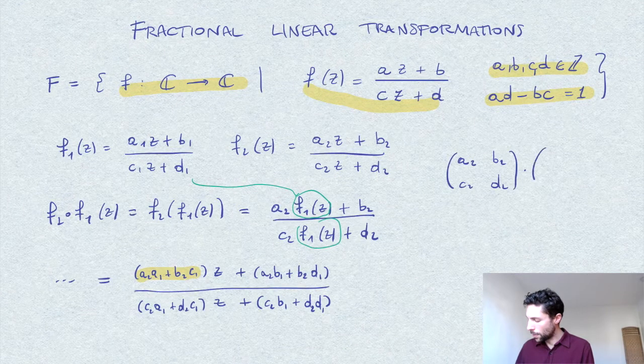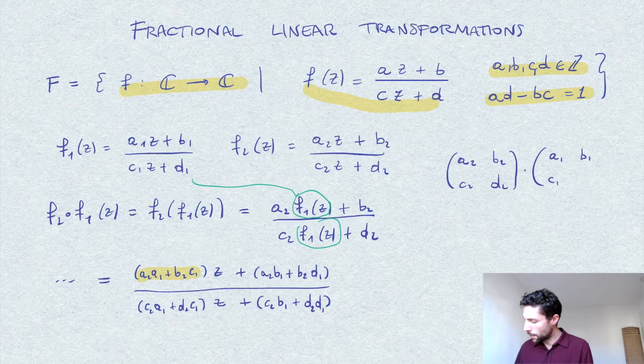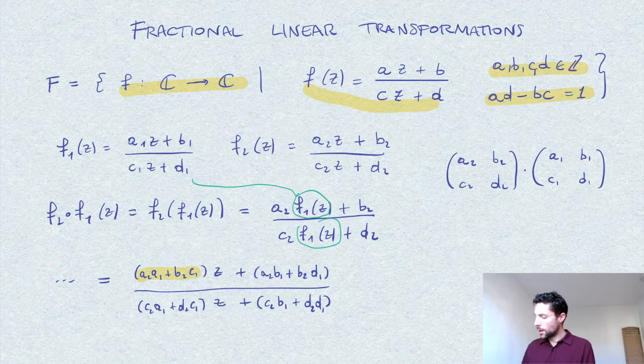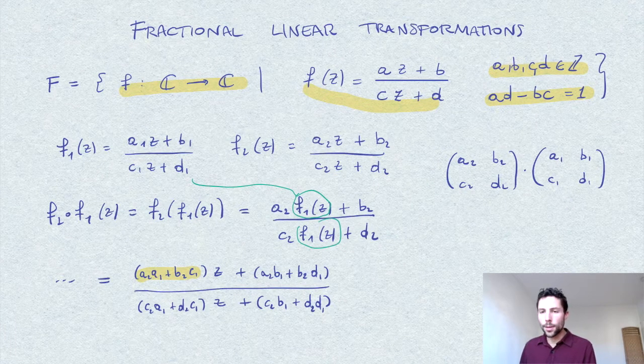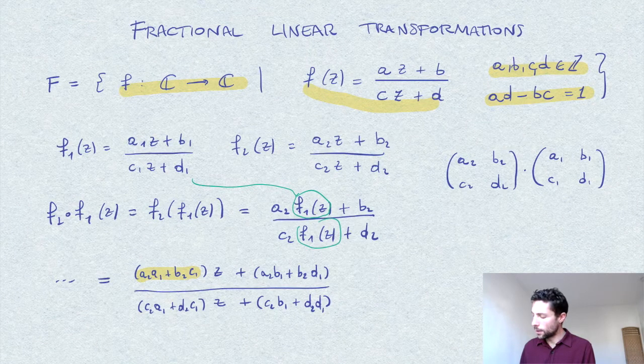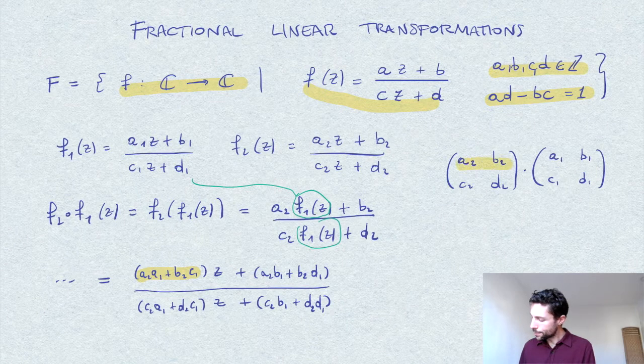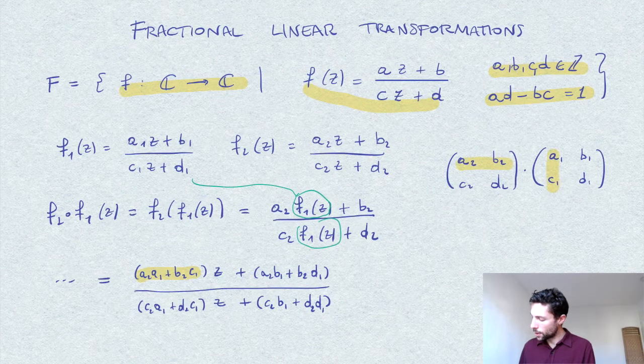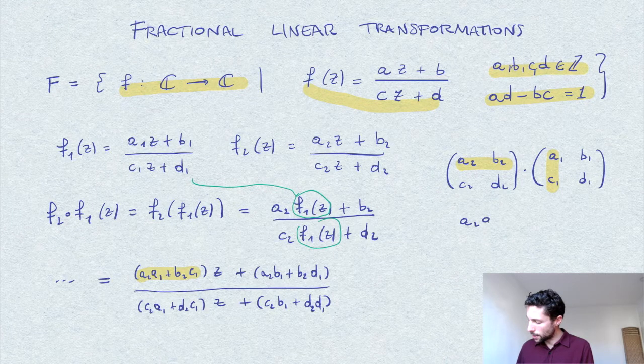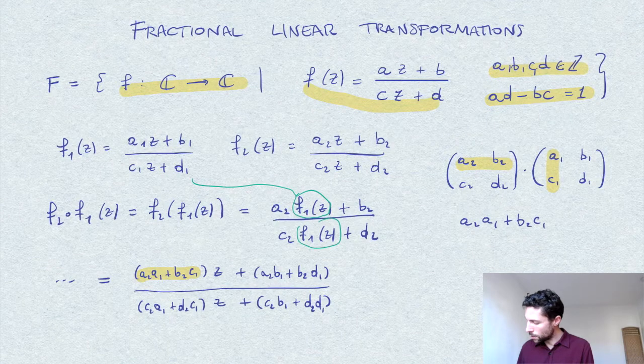You see that the first row element of the product, this row multiplied by this column, is precisely a₂a₁ plus b₂c₁.